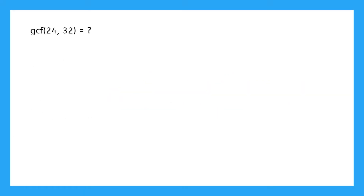Just like finding our LCM, we can write the question as GCF of 24 and 32. This is asking us what is the greatest common factor of 24 and 32. But instead of listing out all the factors for 24 and 32, we can start with prime factorization trees.